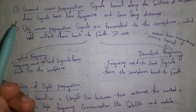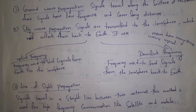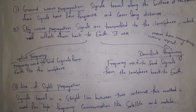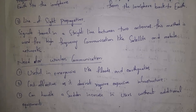The second propagation type is sky wave propagation, where signals are transmitted to the ionosphere which reflects them back to earth. Sky wave propagation uses uplink frequency — transmitting signals from earth to ionosphere — and downlink frequency. The ionosphere is a layer in the sky containing ions, located between 50 kilometers and 1000 kilometers from earth, and it helps in transferring signals.